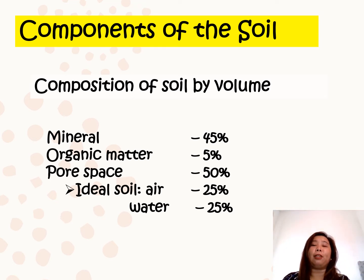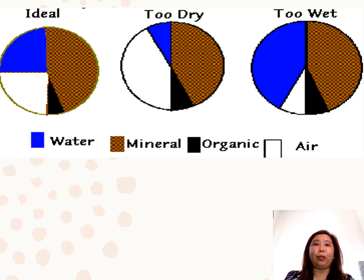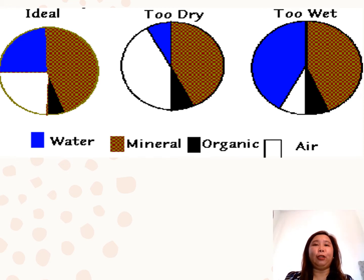That is for an ideal soil. This pie chart shows an ideal soil with 45% mineral matter, 5% organic matter, 25% water, and 25% air.